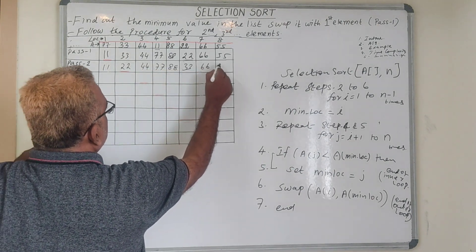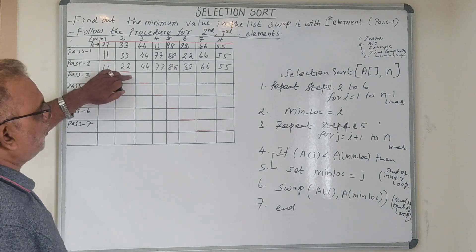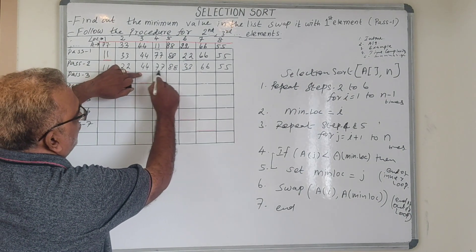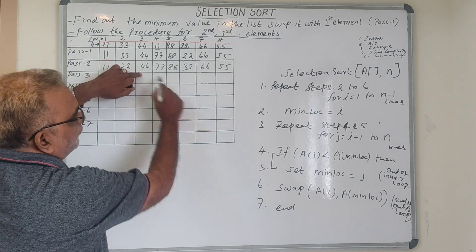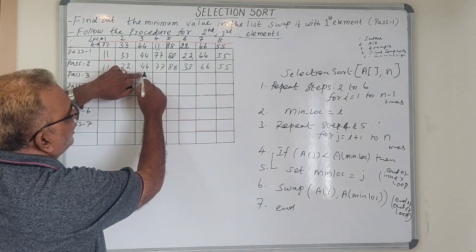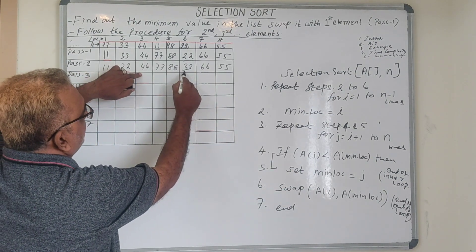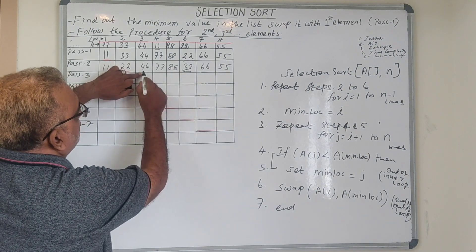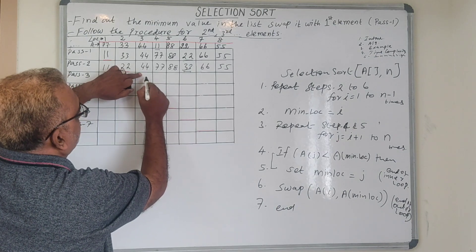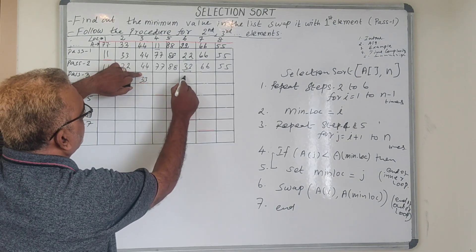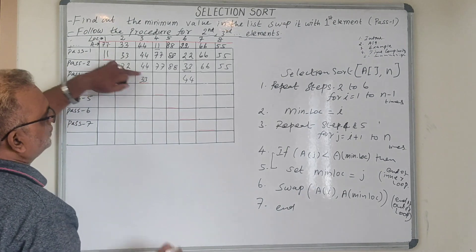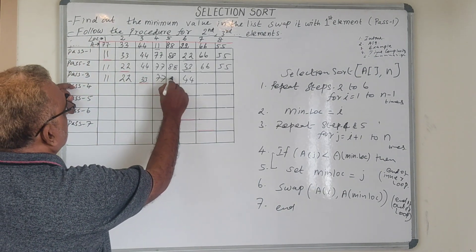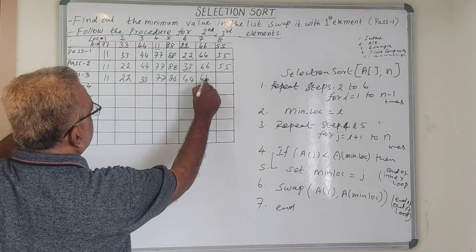The remaining values are 88, 66, and 55. Now we perform the checking from the third element to find the minimum value. 33 is the minimum value comparatively, so 33 swaps with the third element: 33 comes here, 44 goes there. Remaining elements are as they are: 77, 88, 66, 55.